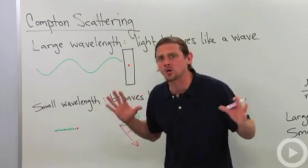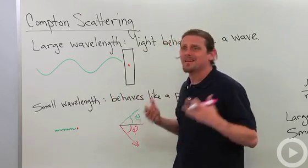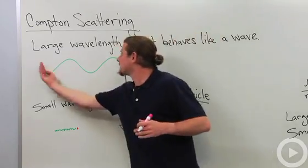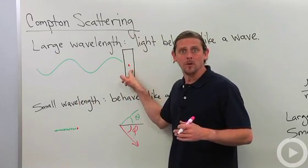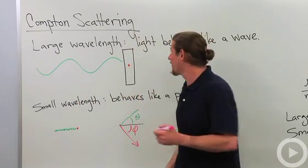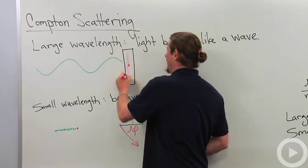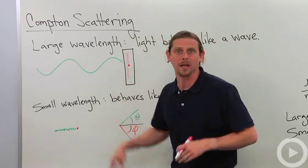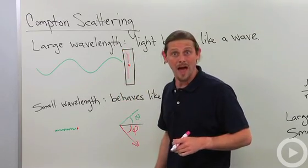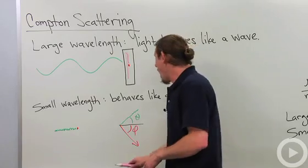When light has a very large wavelength, it behaves like a wave. So if you send light into a metal where the electrons can go back and forth, the electron's just going to go up and down with the electric field associated with that electromagnetic wave.